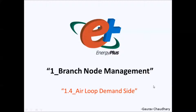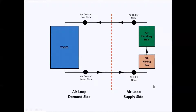We can distribute the air loop into two sides: demand side and supply side. The supply side would contain the AHU and an OA mixing box where outdoor air is mixed. The demand side would be the zones and the VAVs — this is where the air is actually required. For zone G and zone H we'll make two VAVs, and for the remaining zones we'll make one VAV each.